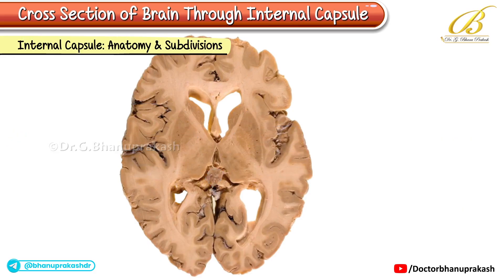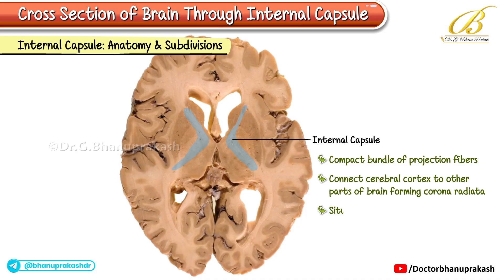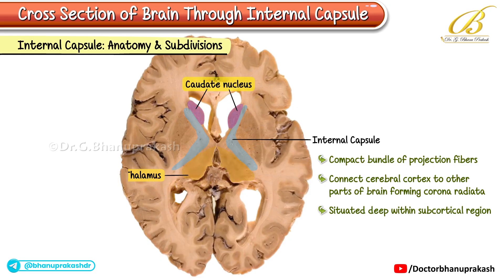Internal capsule anatomy and subdivisions. The internal capsule is a compact bundle of projection fibers that connect the cerebral cortex to other parts of the brain, forming the corona radiata. It is situated deep within the subcortical region, positioned between the head of the caudate nucleus and the thalamus medially, and the lentiform nucleus laterally.